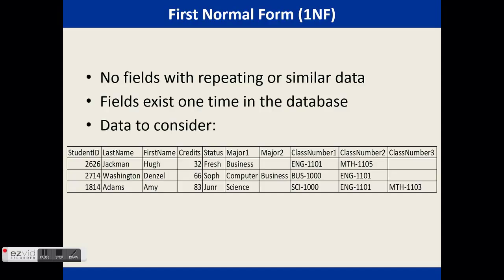In successful first normal form, there are no fields with repeating or similar data. Each field exists only one time and cannot be broken down any further. For example, consider a student table with two fields for major — this is a violation of first normal form because the major field is repeated. The concern is that the design is not flexible or expandable, since a student could want more than two majors.